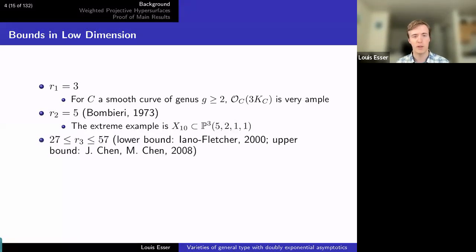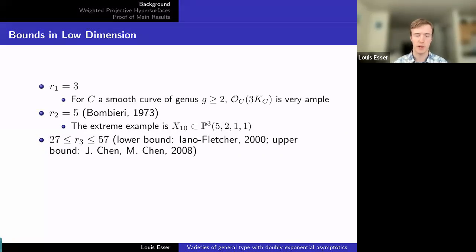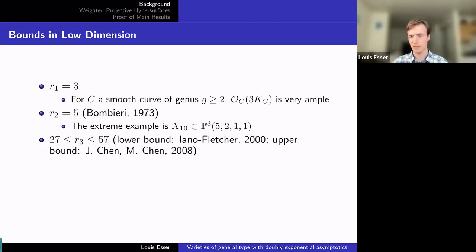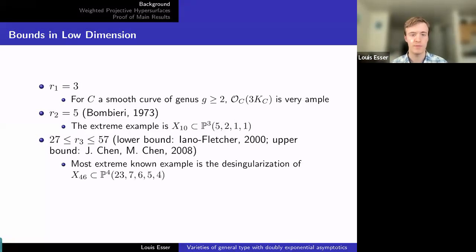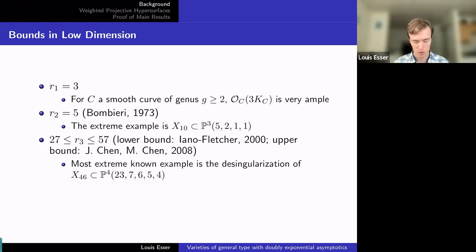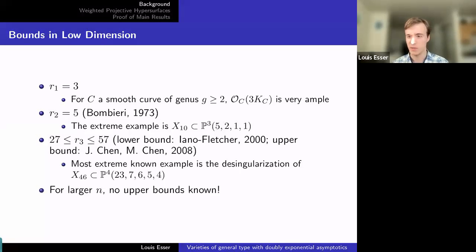Already in dimension three, we're not completely sure what's going on. We have a lower bound and an upper bound — some range. The upper bound is theoretical, due to Zhang Kai Chen and Meng Chen. The lower bound comes from a particularly bad example for which birational maps don't exist until 27 onward, due to Iano-Fletcher — a particular weighted projective hypersurface or its desingularization. For n greater than or equal to 4, we actually don't know any upper bounds for rn. That's a big open question.